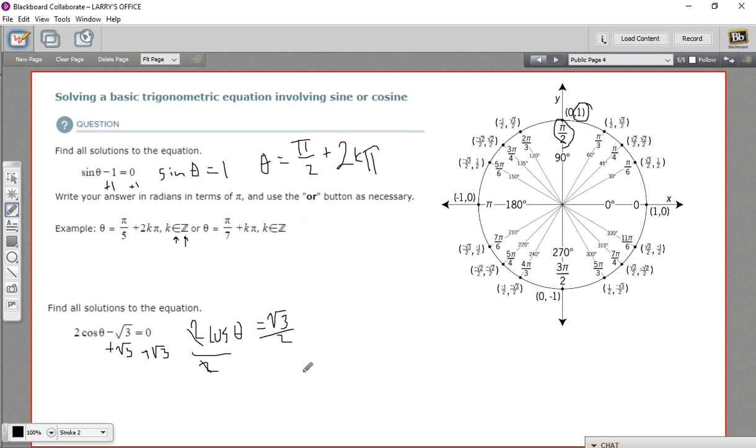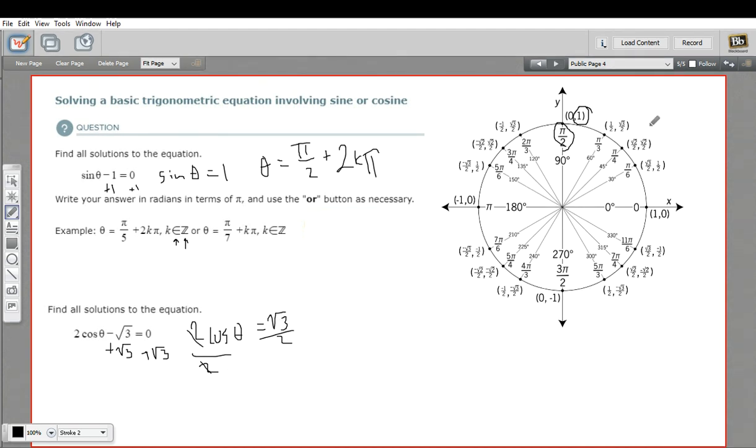So where is that the case? Well, cosine is the x value. So there's one of those right here at pi over 6. And there's one of those that's positive right here at 11 pi over 6. So we've got two answers for this one.